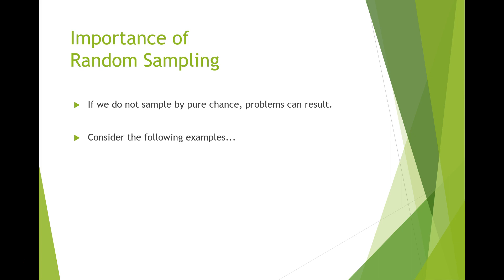To see why random sampling is important, consider the following ways that a sample can be obtained. To build on your understanding of sample and population, identify both of these and then consider the problems with how the sample was selected.